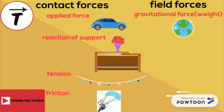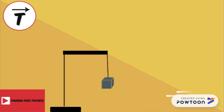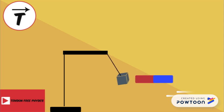Let's speak about the second field force: the magnetic force. The magnetic force exists between two magnets or a magnet and a magnetic material. Consider an iron box that hangs from a rope. If we place a magnet close to it, the iron box will be attracted to the magnet due to a magnetic force that starts from the center of the box and is directed towards the magnet.